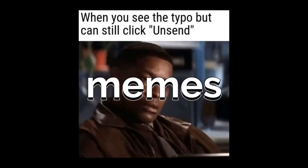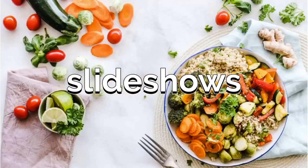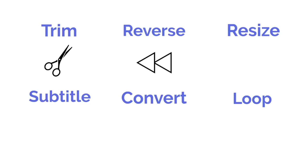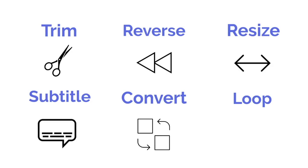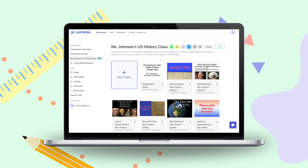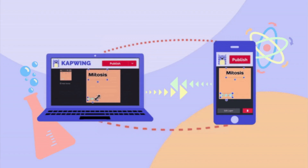Almost any type of video, image, or multimedia digital content can be created in Kapwing. The most popular types are videos, memes, gifs, slideshows, collages, stop motions, and you can also trim, reverse, resize, subtitle, convert, and loop videos — and more features are constantly in the works. Since Kapwing is completely online, this makes collaborating with others really easy. You can share workspaces and projects with other people and even edit simultaneously on one video project. Almost every tool and feature in Kapwing is free.